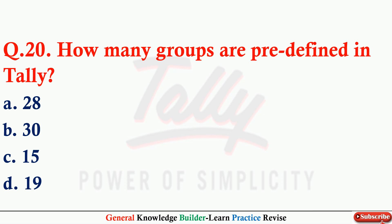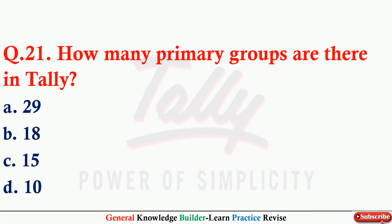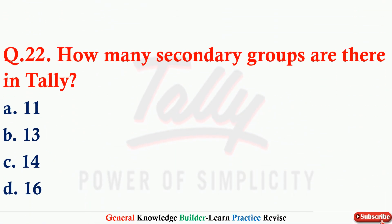Q20: How many groups are predefined in Tally? This is an important question. Option A: 28. Q21: How many primary groups are there in Tally? Option C: 15. Q22: How many secondary groups are there in Tally? Option B: 13 secondary groups.